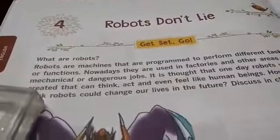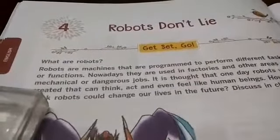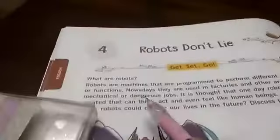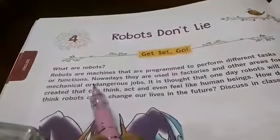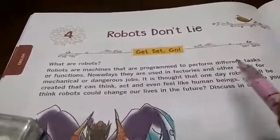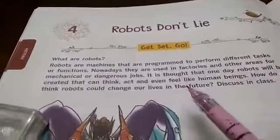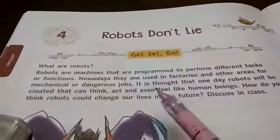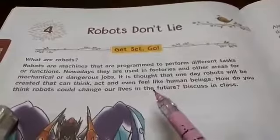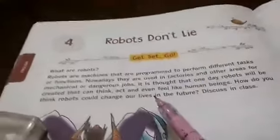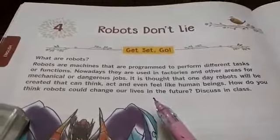So actually, what are robots? I think you all know — if you have watched cartoons, movies, or magazines — robots are machines that are programmed to perform different tasks or functions. There is such a machine that can do a lot of work and help us in factories and other mechanical areas. It is thought that one day will come when robots can think and do our work. Let us start with our chapter: Robots Don't Lie.